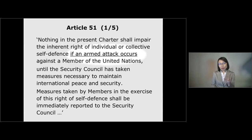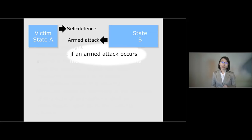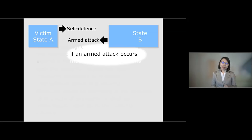First of all, the most important element of Article 51 is the requirement of an armed attack. According to Article 51, a state can resort to self-defense if an armed attack occurs. There are thousands of academic articles on the interpretation of these terms alone. Here I'd like to highlight four different segments of the debate concerning the requirement of an armed attack.